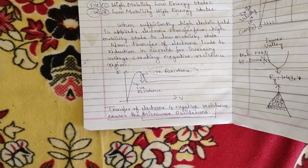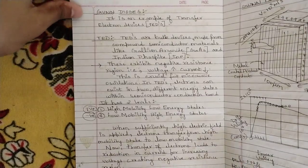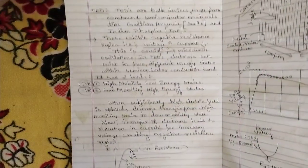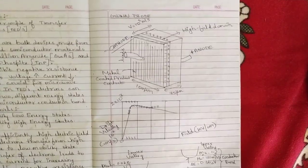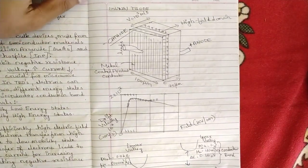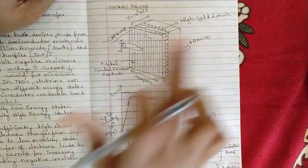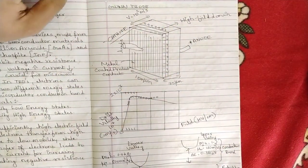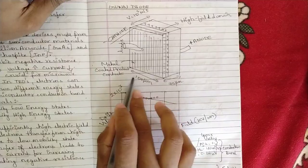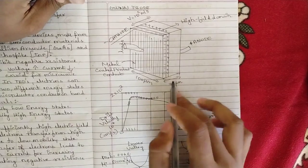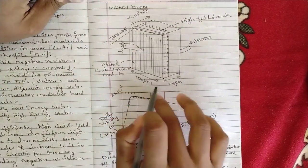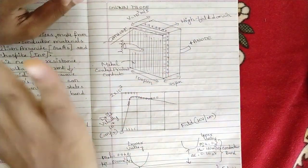These are the fundamental reasons for the formation of microwave oscillations. Please pause and go through these notes — they will be in the description. The first diagram is the simple Gunn diode construction, which has a 100 micrometer width shown in a three-dimensional figure.